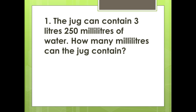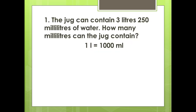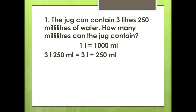For example, a jug can contain 3 liters 250 milliliters of water. How many milliliters can the jug contain? Here, we have to convert liters to milliliters, so we multiply by 1000. Since 1 liter equals 1000 milliliters, we write 3 liters plus 250 milliliters as 3 × 1000 milliliters plus 250 milliliters. The 250 milliliters does not need to be changed because it is already in milliliters.